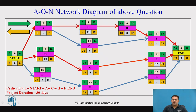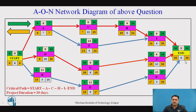Activities I, J, and K have EFTs of 30, 30, and 17. The end (finish) node takes the maximum of these, so EST of the end node is 30, and EFT is 30 plus 0 equals 30. This completes the forward path. Similarly, we now proceed with the backward path, as done in the Activity on Arrow (AOA) network diagram.